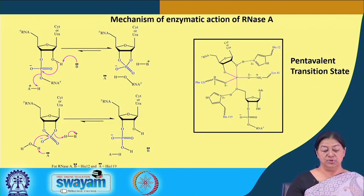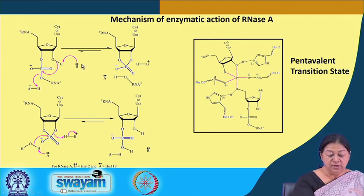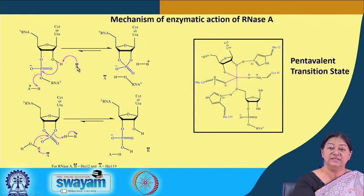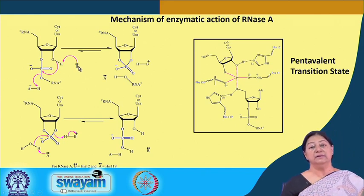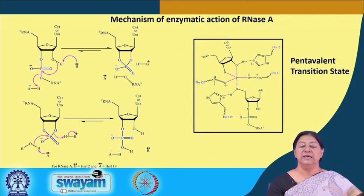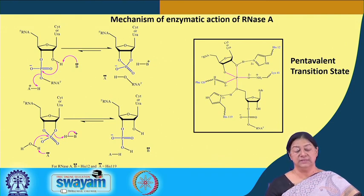In the mechanism of ribonuclease A, two histidines are involved. Histidine 12 (B) acts as a base and histidine 119 (A) acts as an acid. In the first step of the catalytic reaction, histidine 12 behaves as a base. In the second step it reverses its role, because having contributed as a base it must return to its original form to be able to accept another substrate molecule.